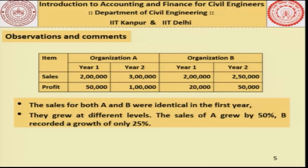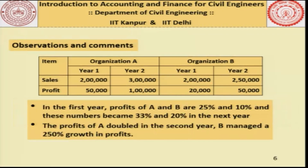Before we go to the next slide, I would like you to spend some time and try to interpret and make notes as to what you can conclude from this information. The sales for both A and B were identical in the first year. However, they grew at different levels. The sales of A grew by 50 percent — 2 lakh became 3 lakh. In the case of B, this growth is only 25 percent.